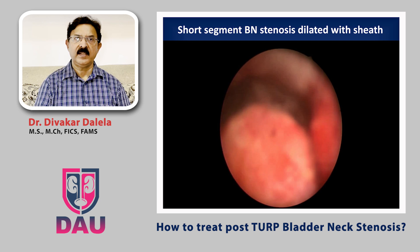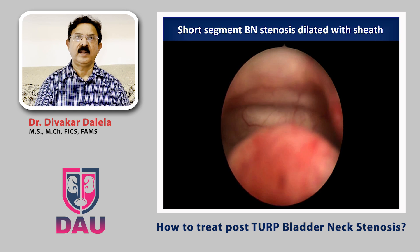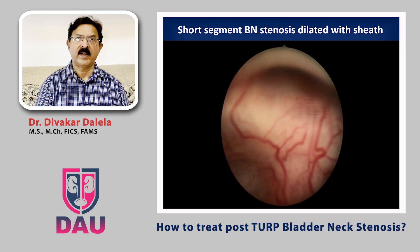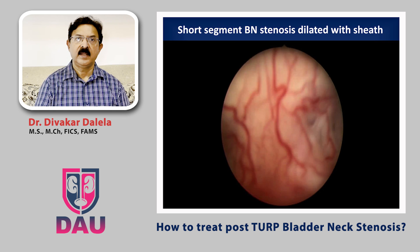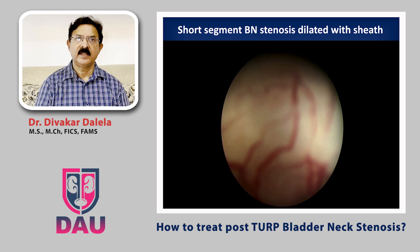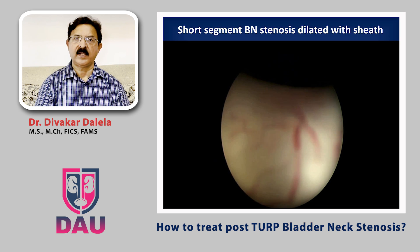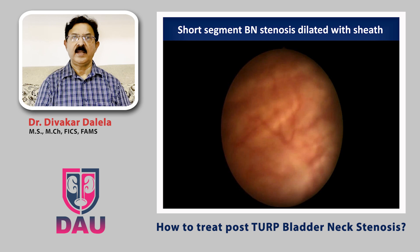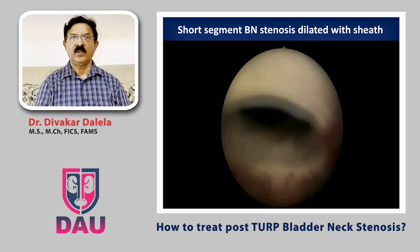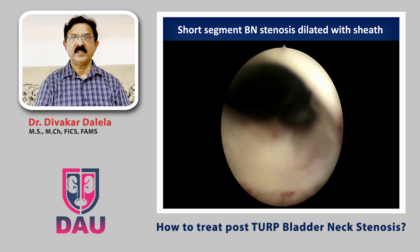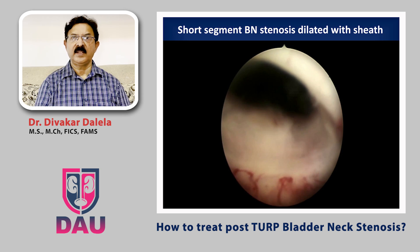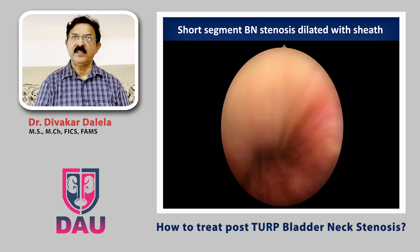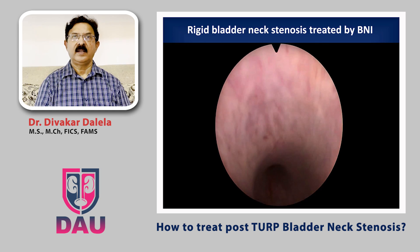Here is another case of bladder neck stenosis. This is the verumontanum and as you go close to the bladder neck you notice a narrowing. Look at the location of the narrow bladder neck — it is towards the 12 o'clock of endoscopic vision. You apply pressure with the sheath to enter the bladder, and gradually you go inside. The bladder shows some trabeculations which will happen in these patients. As you come out you will see the effect of dilatation on the bladder neck — you will notice some whitish scar. This patient will recur with bladder neck stenosis; the cystoscopic dilatation will not be enough. You can buy time with it but subsequently he will require a formal bladder neck incision.